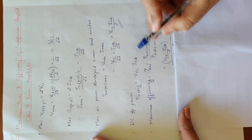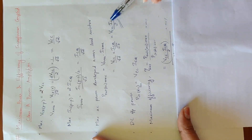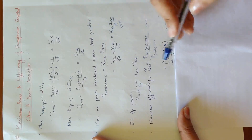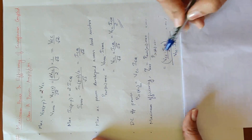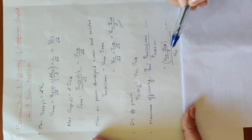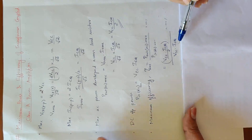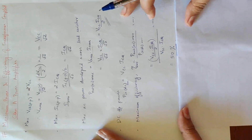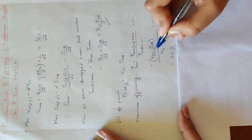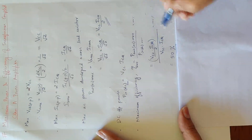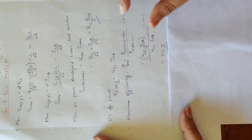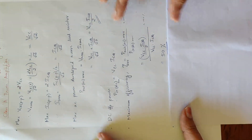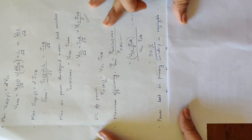Substituting output AC power: VCC into ICQ divided by 2, whole divided by DC input power, that is VCC into ICQ. This gives one-half, multiplied by 100, that is 50%. Overall efficiency is 50%.